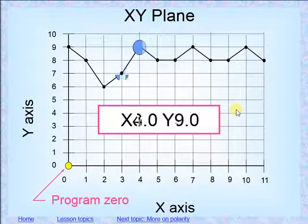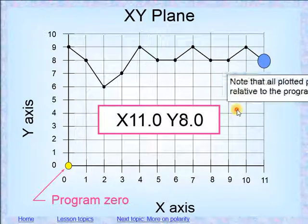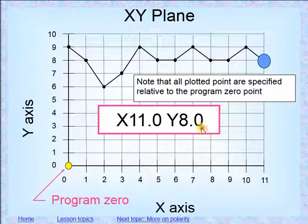So see as we go across, each one of these coordinates changes until we get to the end. All right so all these points, as you look, are relative to the actual origin or the program point. What that means is that these are all absolute numbers. We'll get into absolute incremental a little bit later, but for now you'll see that they're all relative to this.